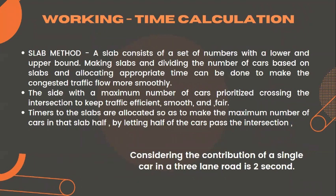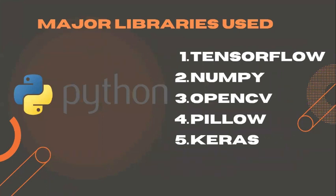For time calculation, we have used the slab method. A slab consists of a set of numbers with a lower and an upper bound. Dividing the number of cars into slabs and allocating appropriate time makes congested traffic flow more smoothly. The side with the maximum number of cars is prioritized, keeping traffic efficient, smooth, and fair. The major libraries we used are TensorFlow, NumPy, OpenCV, Pillow, and Keras — all Python libraries.